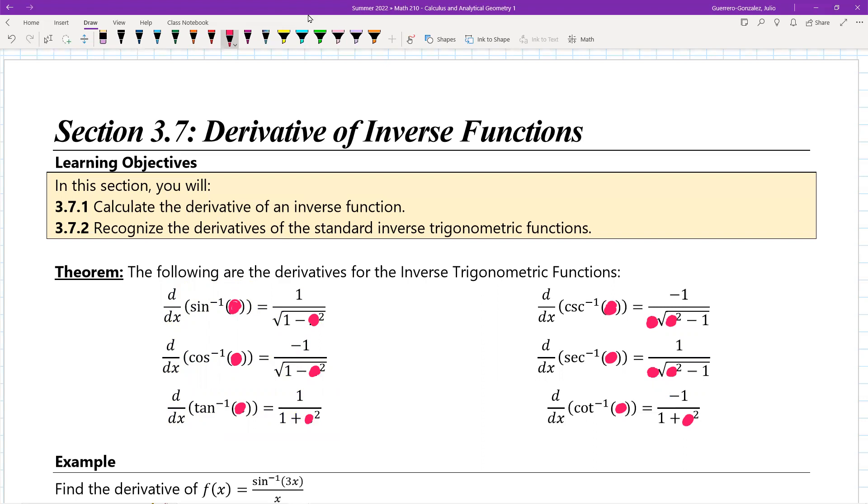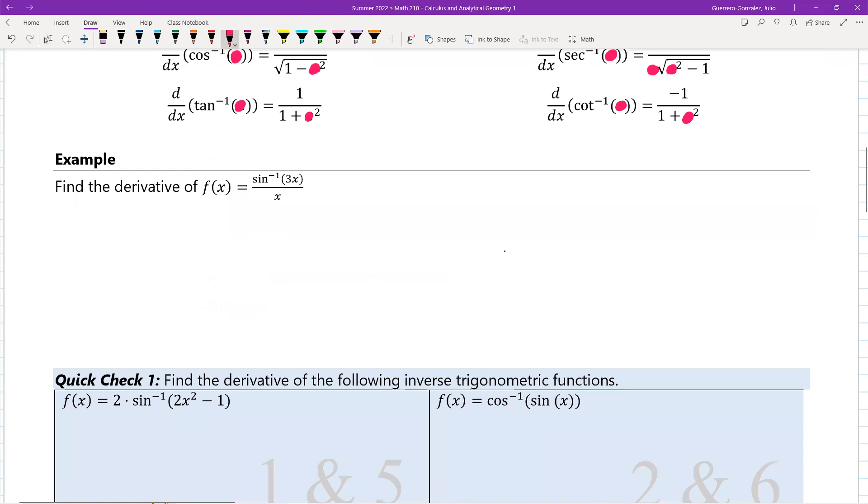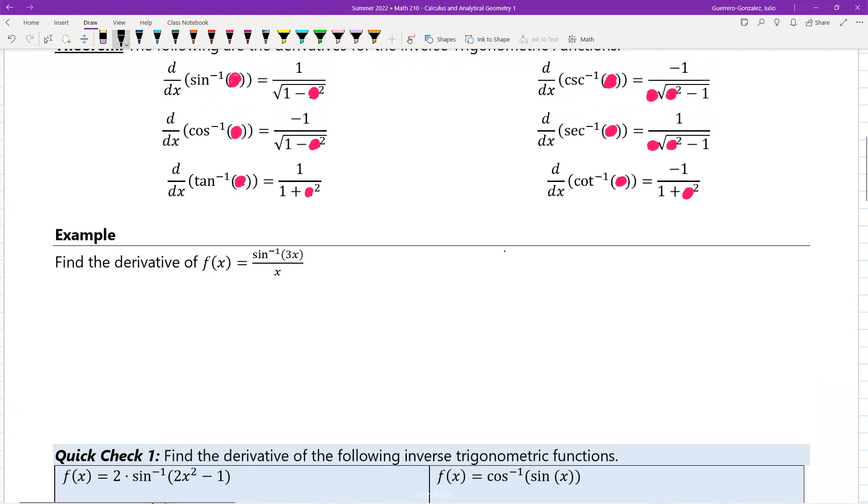To sort of provide an example of what I'm talking about, I'm going to go ahead and do the next example that's down below. So this is a quotient, and it's got a sine inverse on top of 3x. So what I'm going to have to do here is I'm going to have to have that 3x plug in everywhere where there's the x in the sine inverse rule.